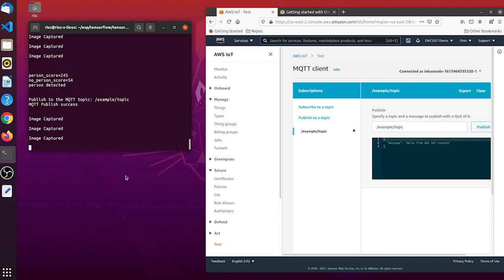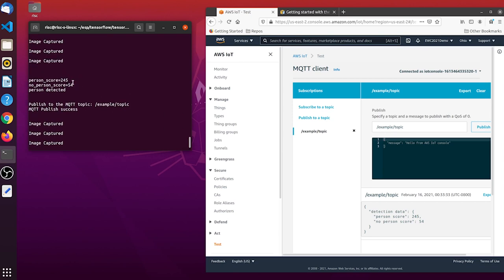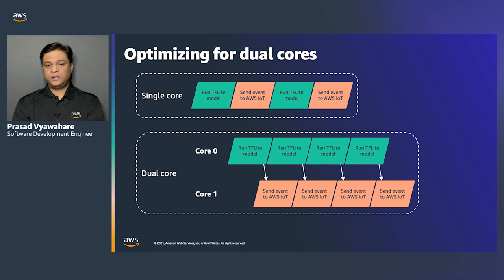A face has been detected and a message is published on the example topic. In the AWS IoT console, we see the JSON received as well. Using dual cores improves performance: when using a single core, the next inference is delayed if the core is busy communicating data to AWS IoT Core. This can be improved by using core 0 for the TF Lite model and core 1 for all other communication or application tasks.